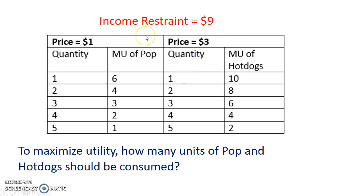This income or budget restraint is how much a person has to spend. So to maximize utility, how many units of pop and hot dogs should be consumed?